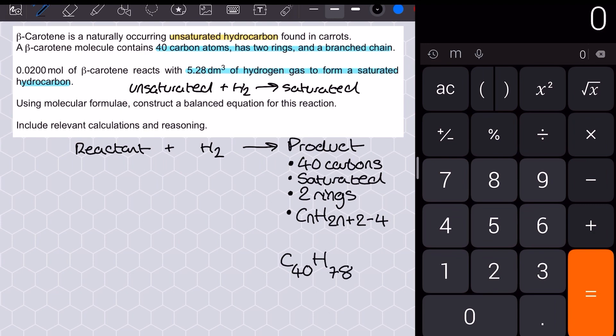That allows me to determine the formula must match the general formula of CnH2n plus 2 minus 4, and here we have C40H78 as the formula of the product.